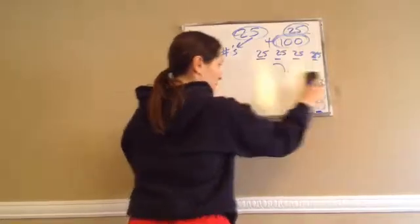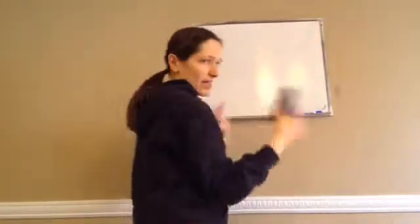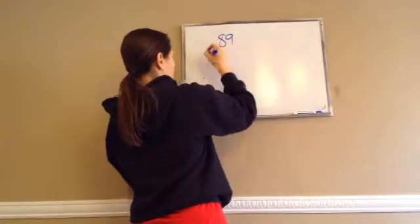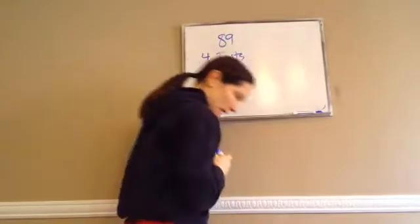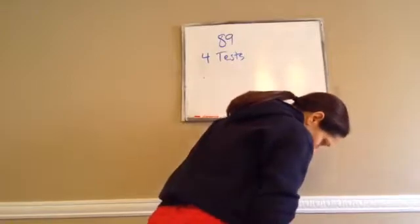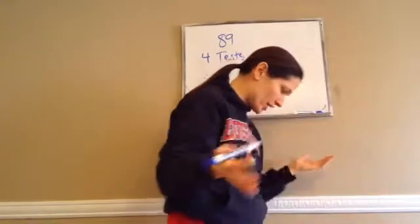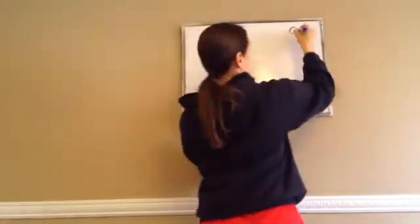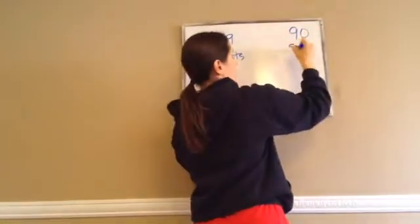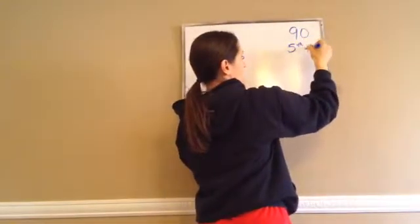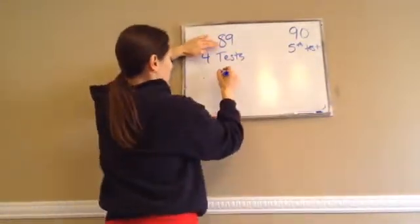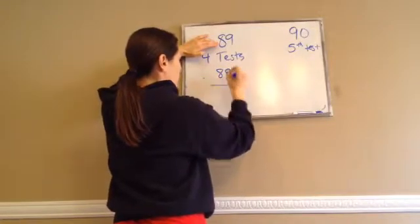Let's try another one — this is actually like test scores. After four tests, Annette's average score was 89. What score does she need on her fifth test to bring her average up to 90? So after her fifth test she wants her average to be 90. After four tests, what's her total sum so far? Let's figure it out.